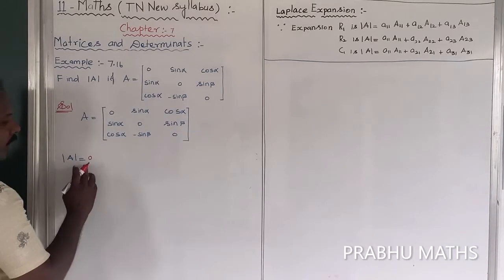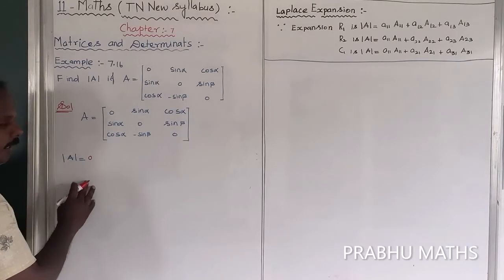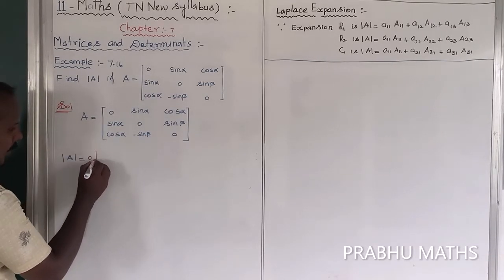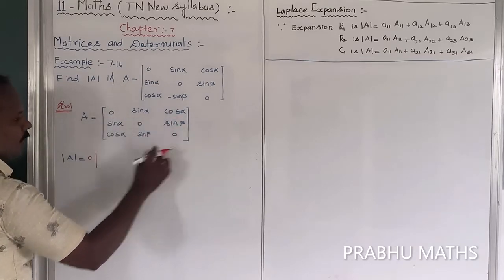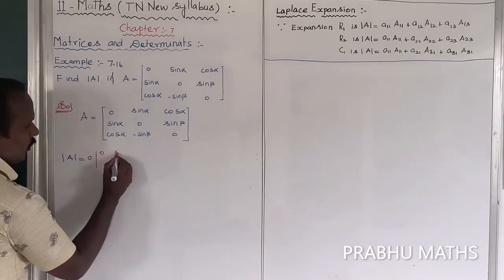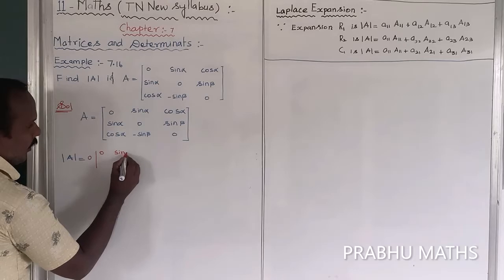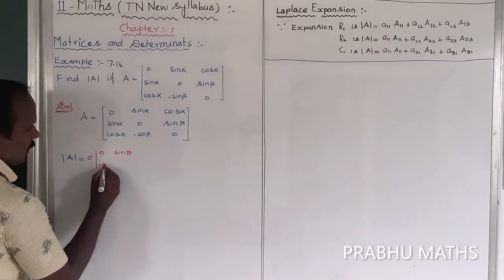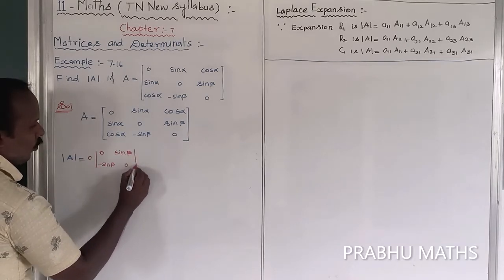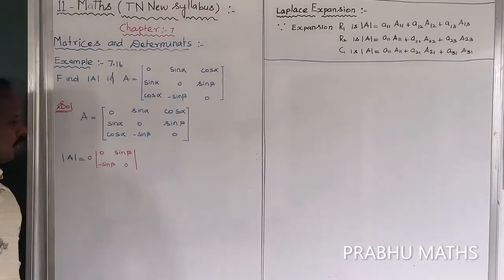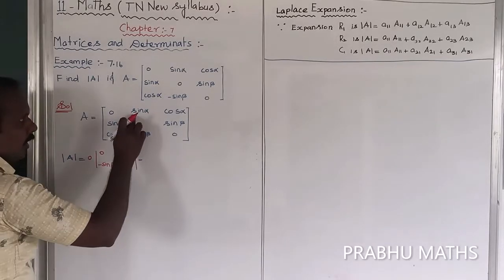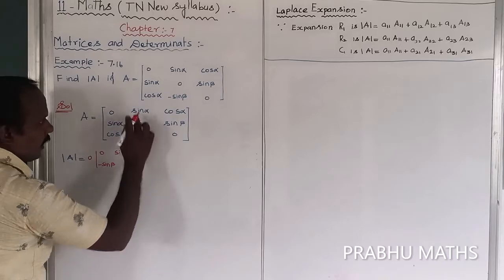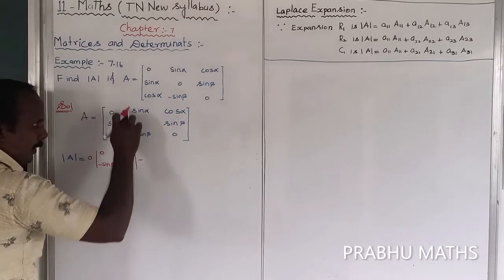A11 corresponds to the minor obtained by removing its row and column. The minor determinant of A11 is the 2x2 matrix with entries [0, sin β; -sin β, 0].